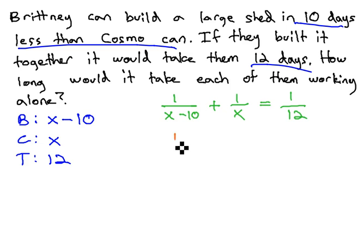This gives us an equation we can solve by clearing the fractions with the least common denominator. Remember, x minus 10, the whole denominator is a factor in itself, so we need 12x times x minus 10 for the least common denominator.